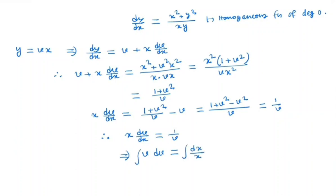In the next step, we take integration on both sides. So we have v²/2 = ln|x| + C.